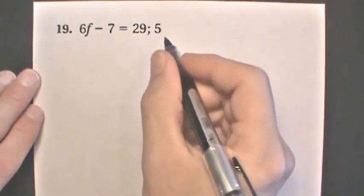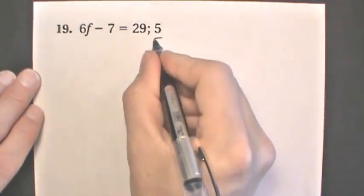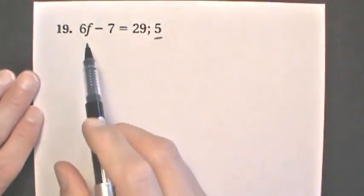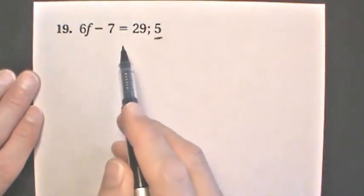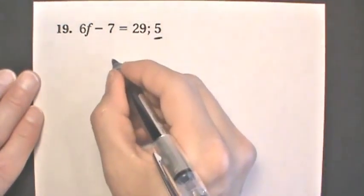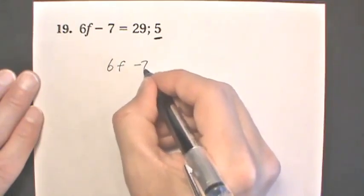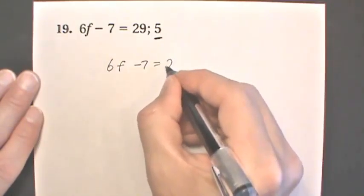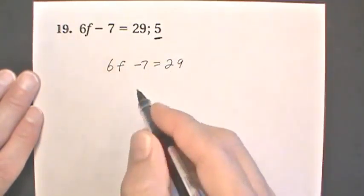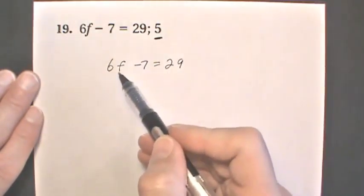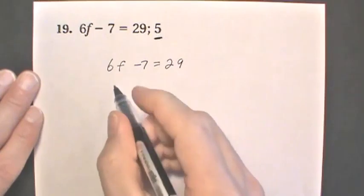Problem 19: we need to determine if 5 is a solution for this equation. So we have 6f minus 7 equals 29. We're going to replace f with 5.